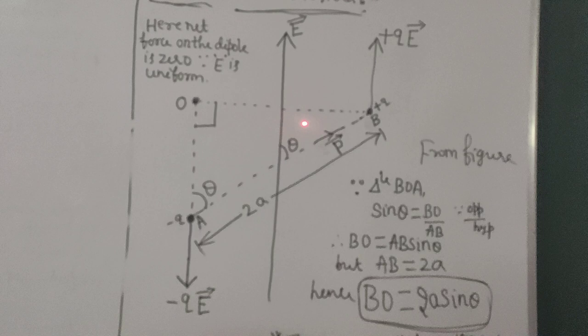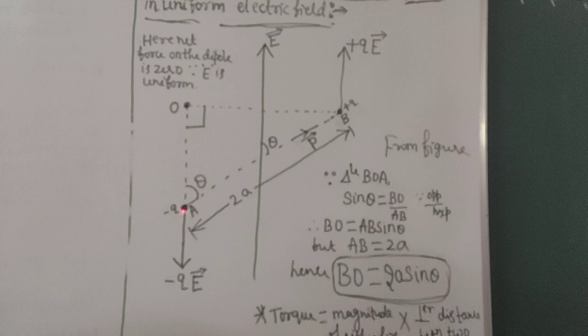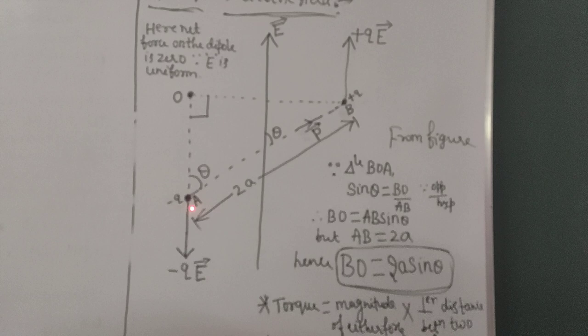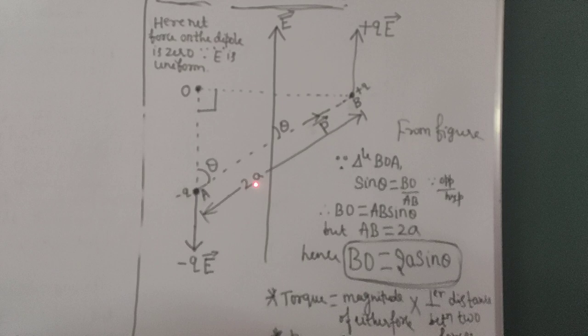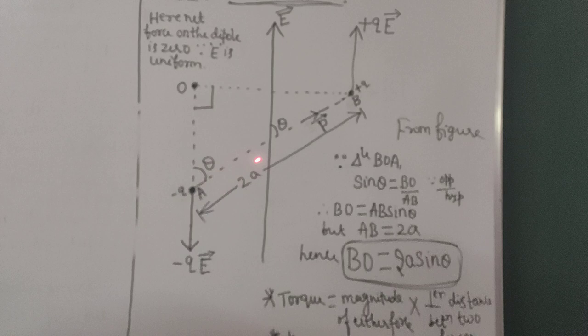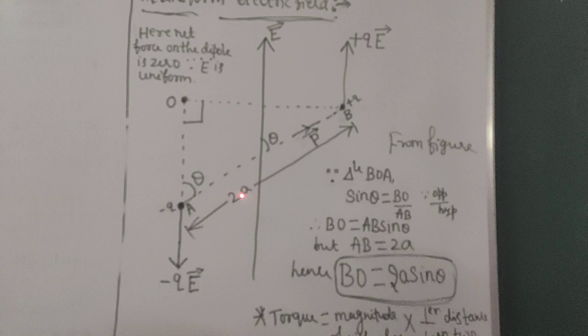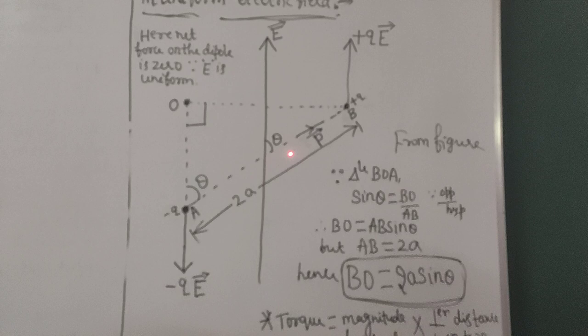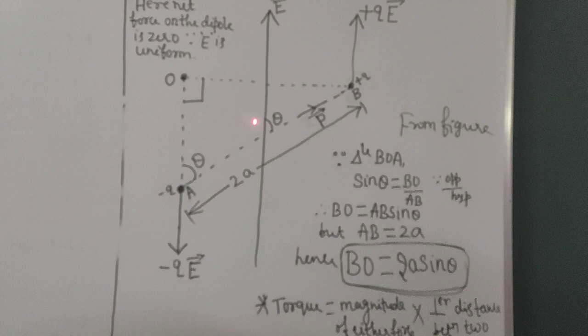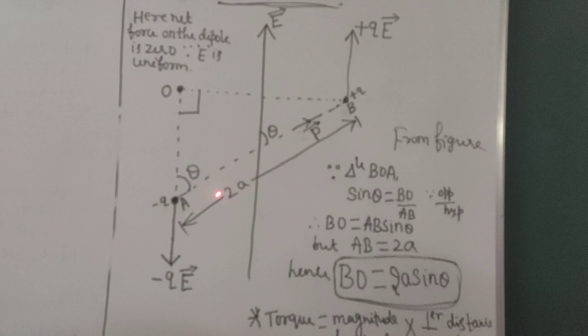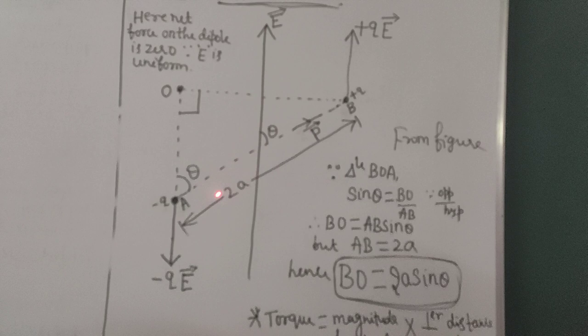Consider the diagram: we have charge -Q at point A and charge +Q at point B, separated by distance 2A — that constitutes a dipole with dipole moment P. This dipole is placed in a uniform electric field E. The angle between the direction of electric field E and the dipole axis is theta.